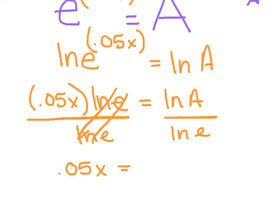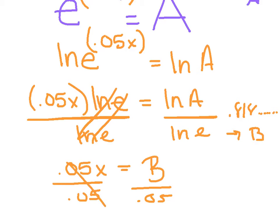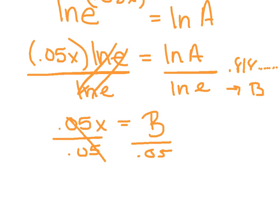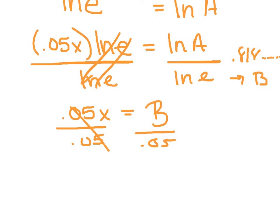ln of A divided by ln of E. And remember, E is a number on your calculator. E is a constant. I get 0.8183 and I'm storing that into alpha B. So I've got some crazy repeating numbers, so I'm storing that into B. And lastly, to get x by itself, I'm just going to divide both sides by 0.05. And I believe you should get x equals 16.366.